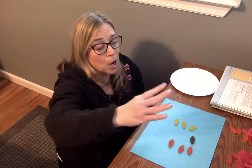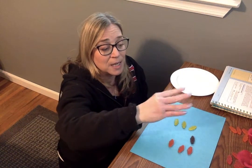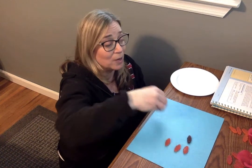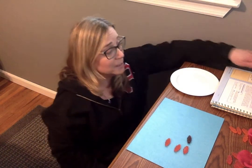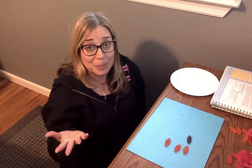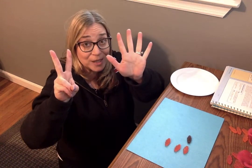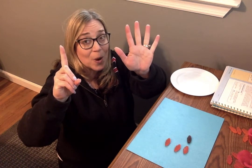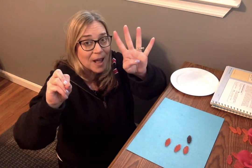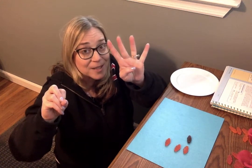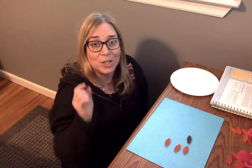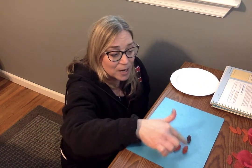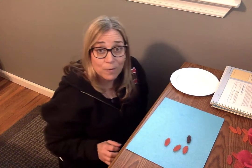Along comes that hungry shark. He eats three. One, two, three. All gone. The shark ate them. So if we had seven fish and the shark ate three — one, two, three — how many fish are left? Did you say four fish? Are you right? Let's see. One, two, three, four. There are four fish left.